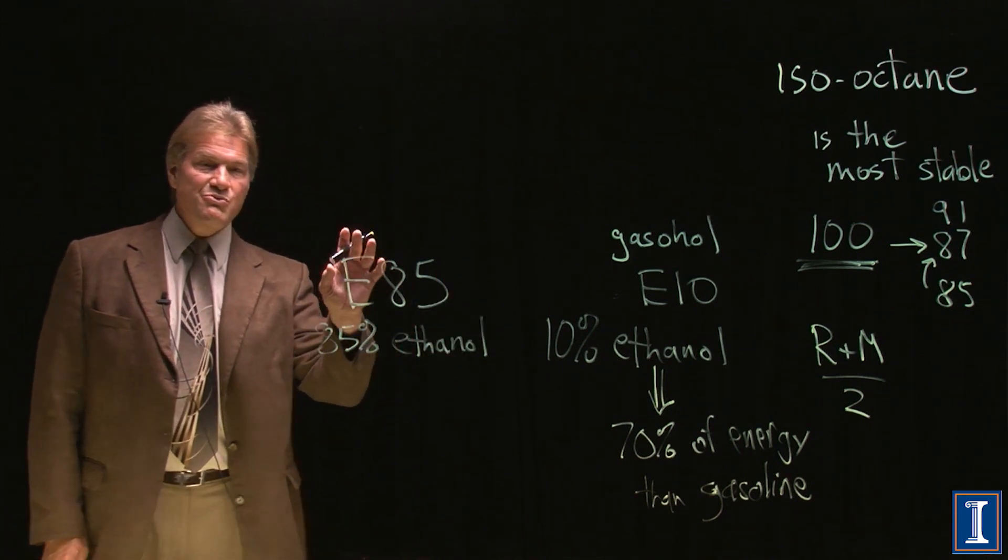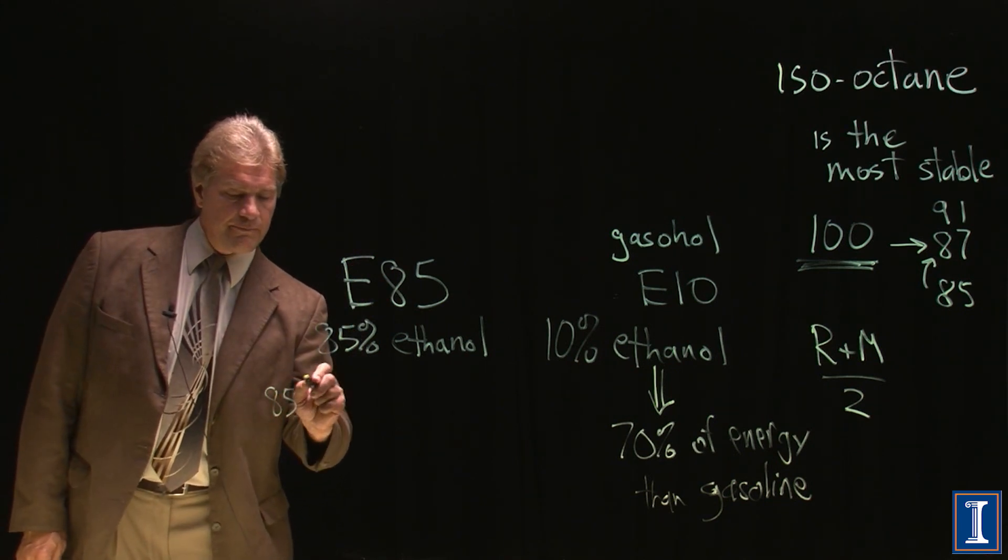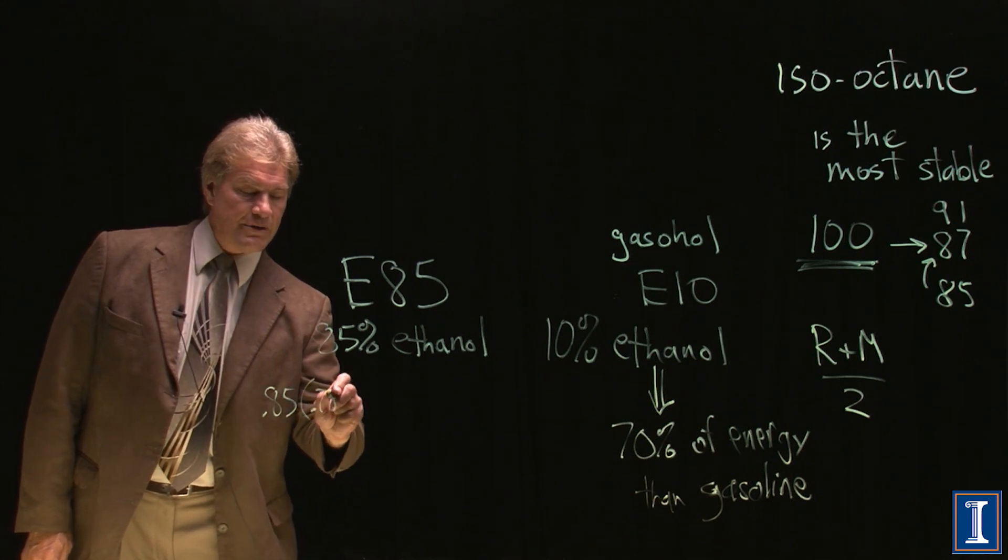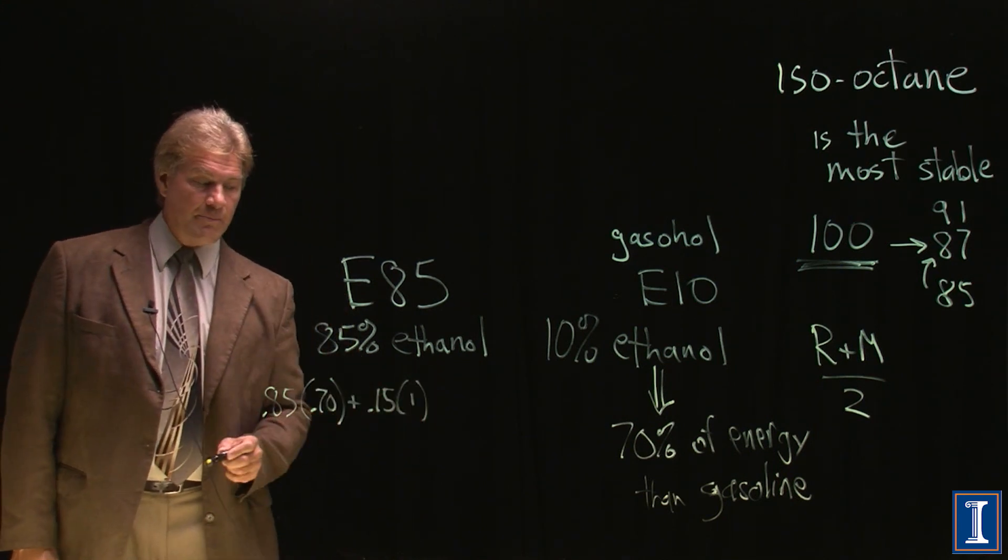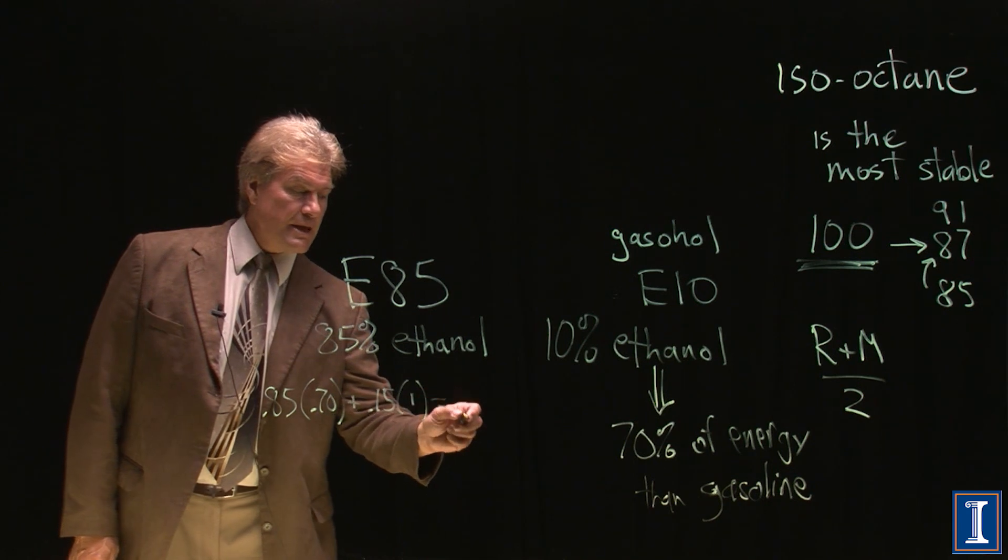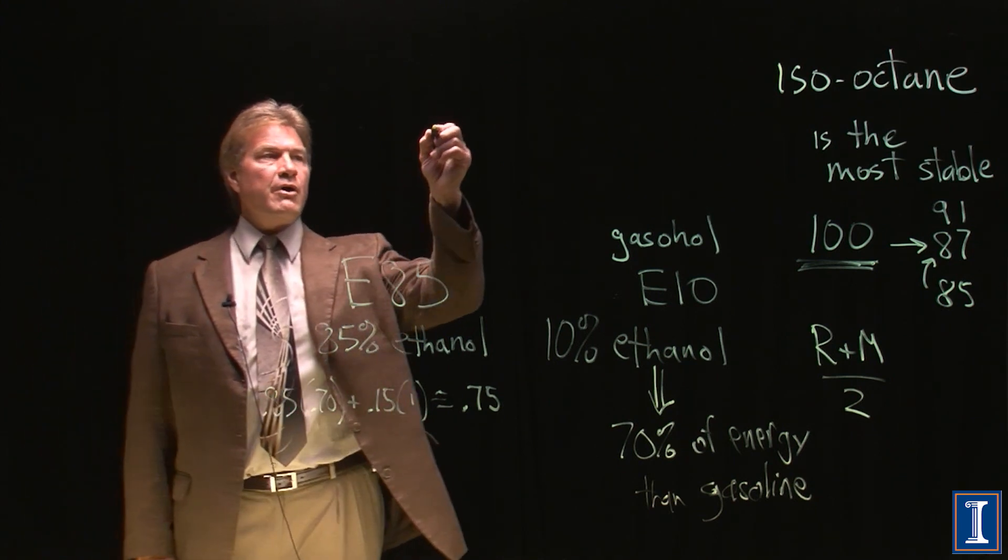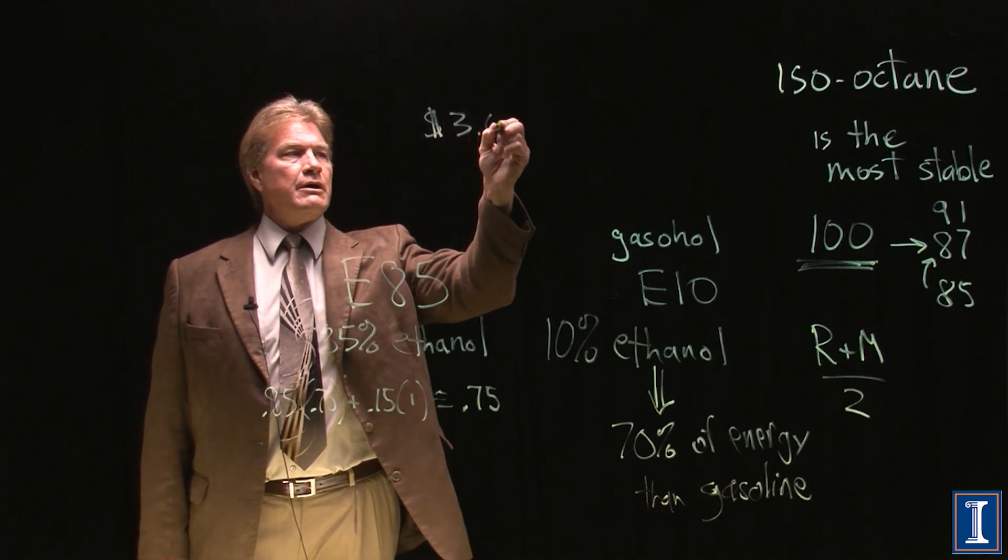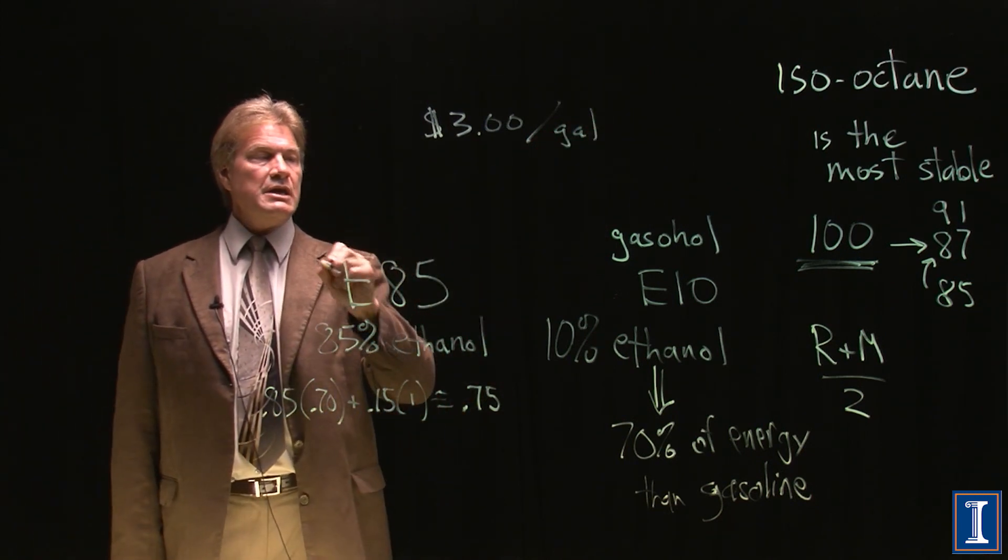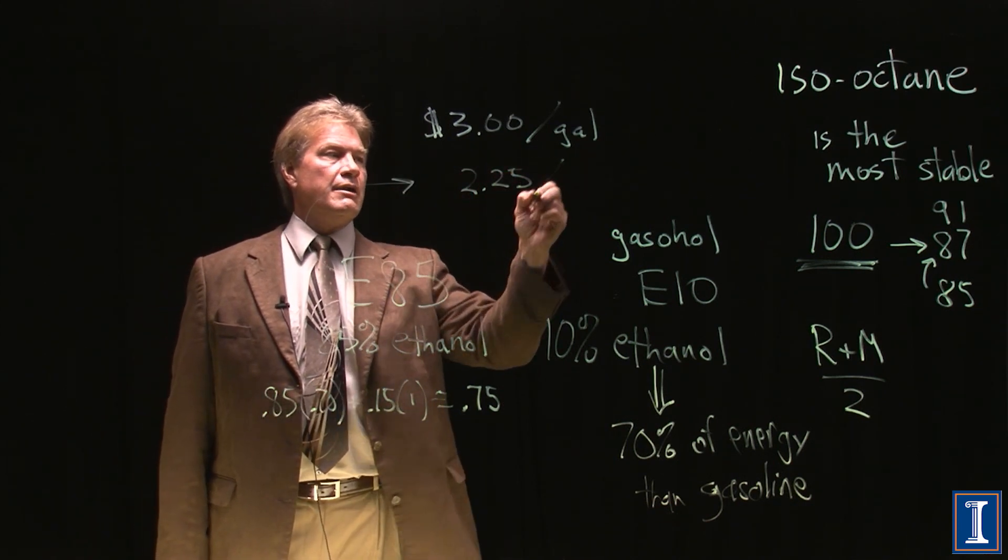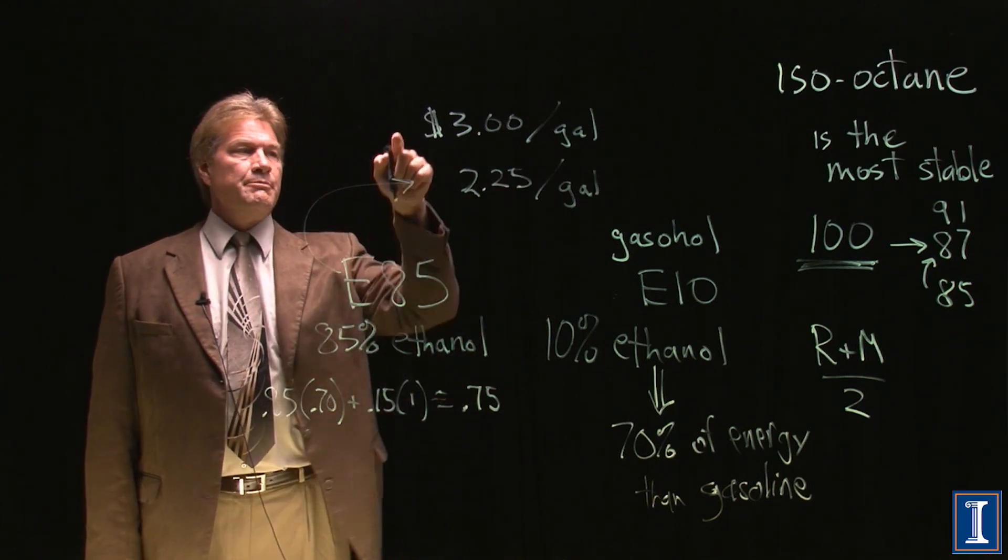Here you really notice the lack of energy. If I take 85% times the 0.70, and then of course the other 15% is gasoline, so have that be one, and I multiply that together, this is about 0.75, it's about three quarters. So if the price of gasoline is three dollars per gallon, to get the same mileage, to get the same energy use, your E85 better cost 75 percent of that, or two dollars and 25 cents per gallon. If it doesn't, buy the gasoline.